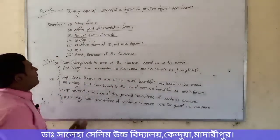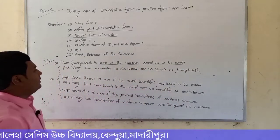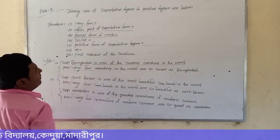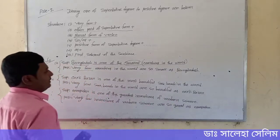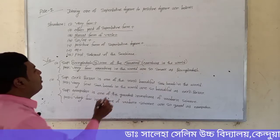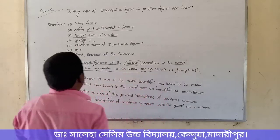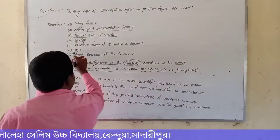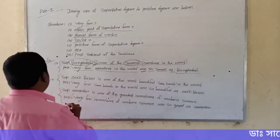Here are some examples. First — superlative: 'Bangladesh is one of the smallest countries in the world.' According to structure, we take 'very few,' then other part — superlative is 'smallest,' other part is 'countries in the world.' Plural form of verb: verb is 'is' (singular), but we take plural form 'are.' From structure, so/as — we take 'so.' Positive form of 'smallest' is 'small.' Then 'as,' and finally the first subject: 'Bangladesh.'